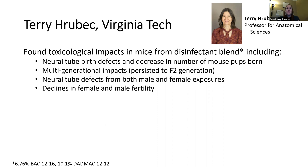What's really interesting is that these mice weren't being directly dosed — they were just in an environment where quacks were present. She did further studies and found multi-generational impacts persisting down to the F2 generation. They saw neural tube defects from both male and female exposure, declines in female and male fertility, and notably, the only way to get a true control group was to move to a completely different building that didn't use quacks — because even when trying hard to avoid exposure in their own building, the quacks were still present due to how sticky they are.